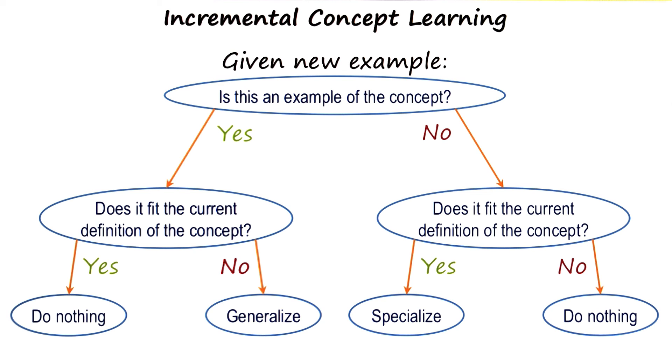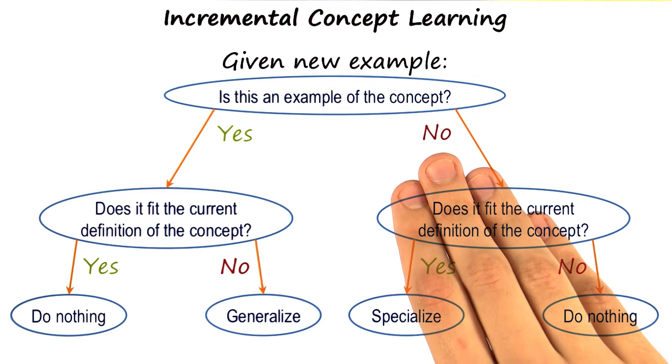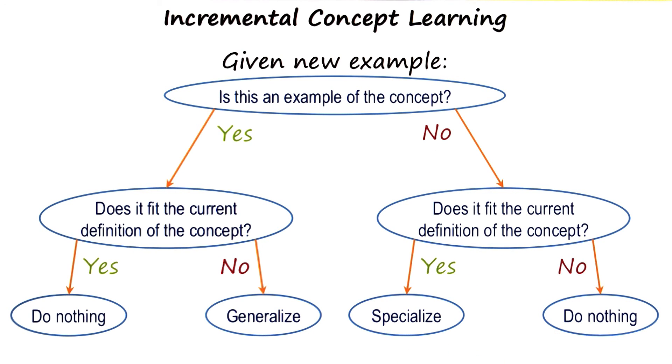And right now, that orange cat fits his definition of a dog. It's furry, it has four legs, and they keep it as a pet. But he's told that this cat is not a dog. So he needs to specialize his concept of a dog to exclude this cat. That's good David, it connects things with our everyday lives.